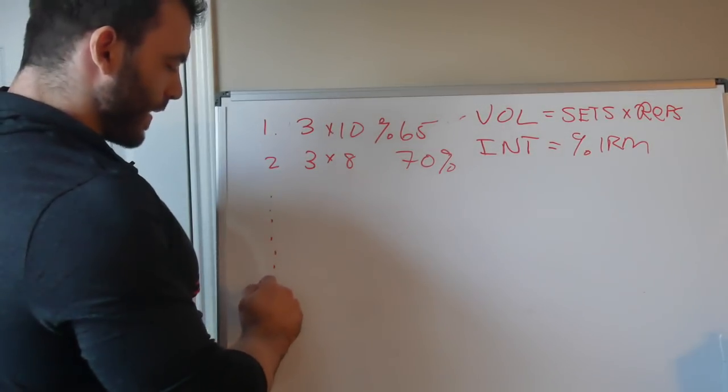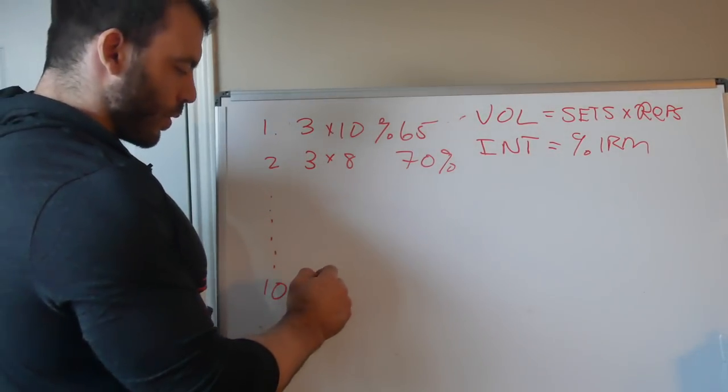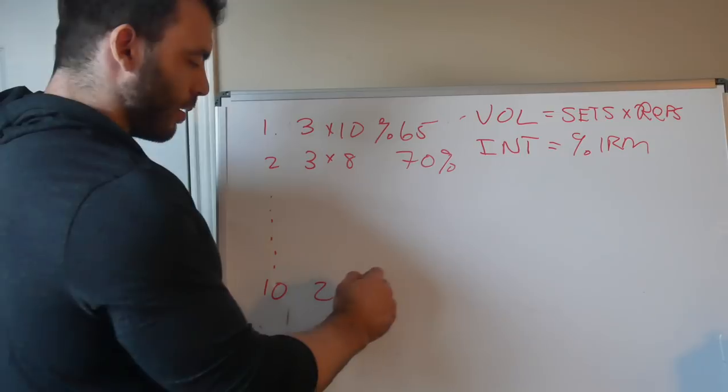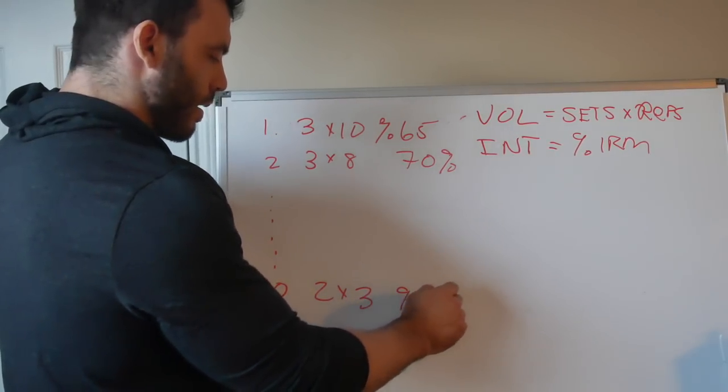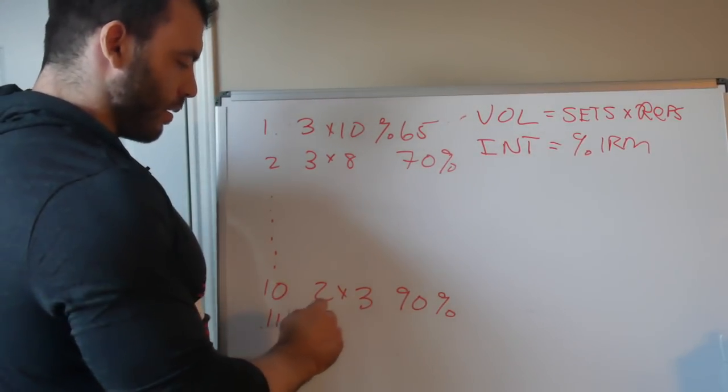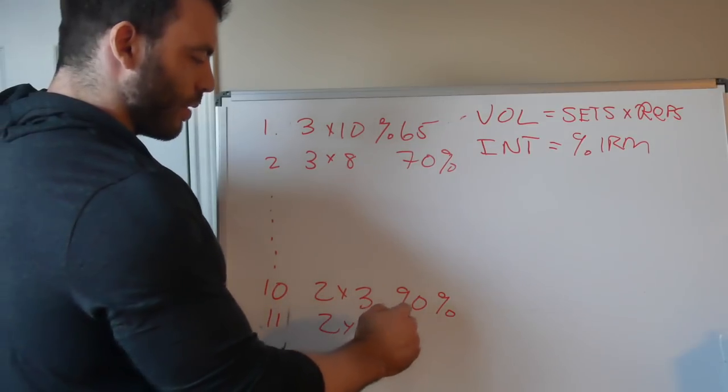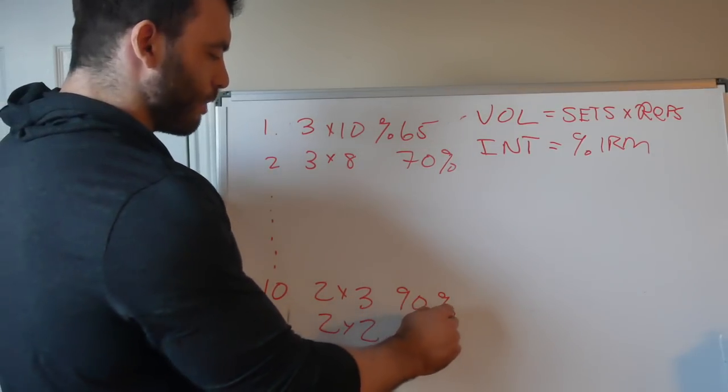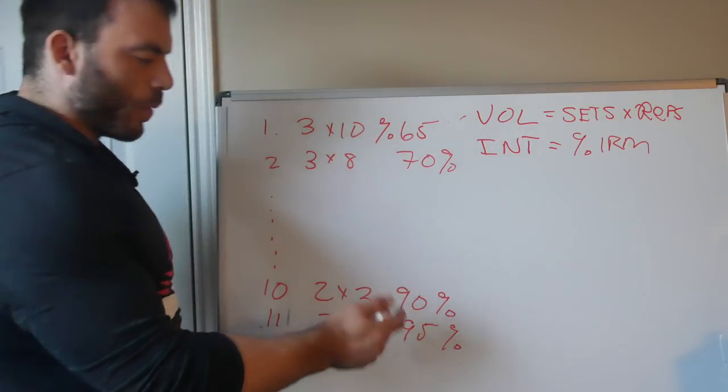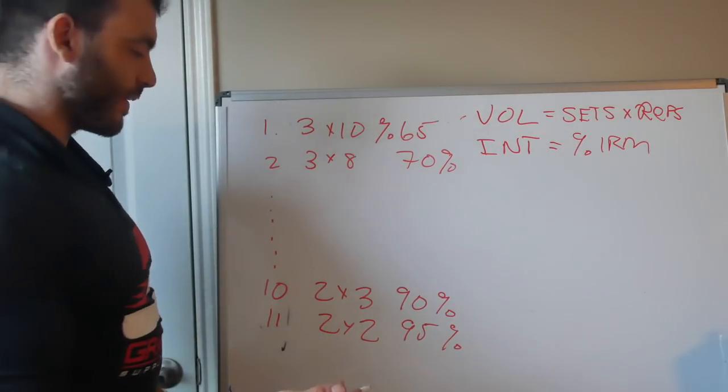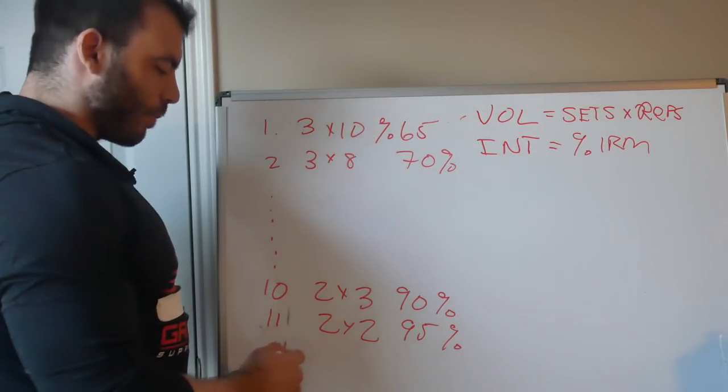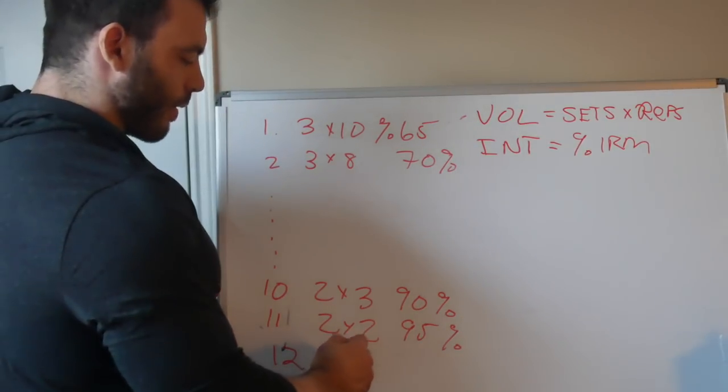And now maybe in week 10, we're doing 2 sets of 3 at 90%, and then 11, 2 sets of 2 at, let's say, 95%. And you wouldn't want to use these exact percentages. These are just examples. But then maybe we take a break, and then in week 12, we test our 1-rep maxes.